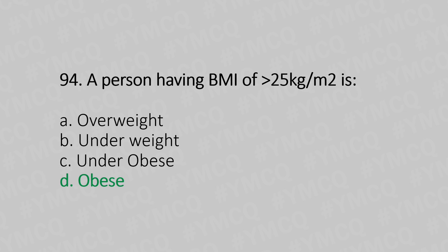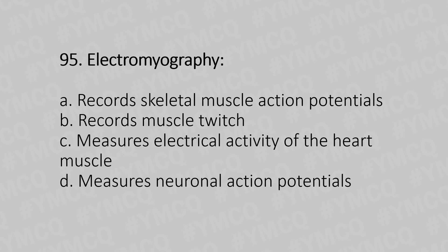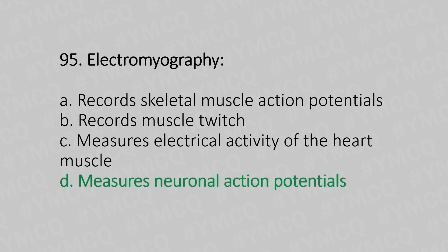Question 95: Electromyography — option A: records skeletal muscle action potential; option B: records muscle twitch; option C: measures the electrical activity of the heart muscle; option D: measures the neuronal action potentials. The answer is option D: measures the neuronal action potentials.